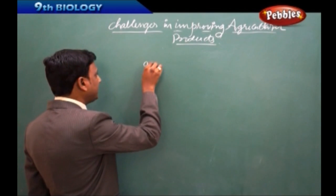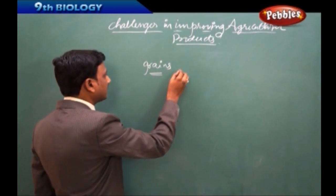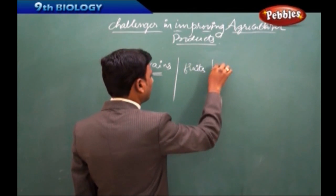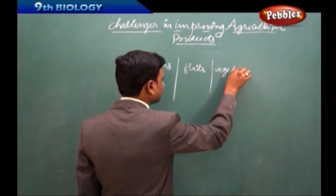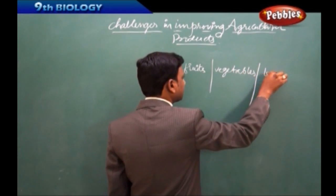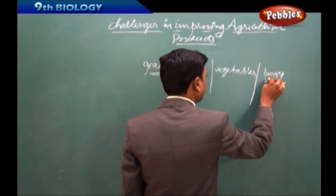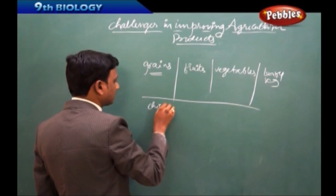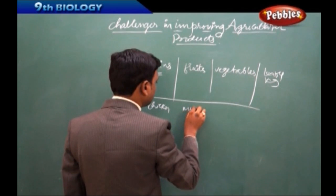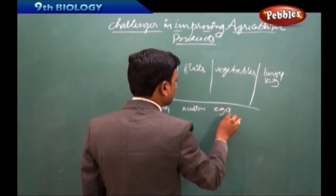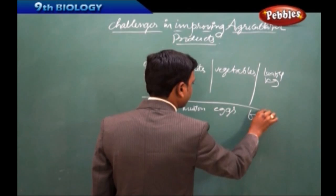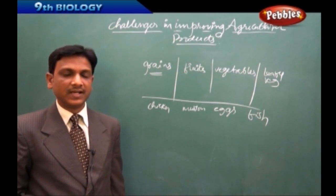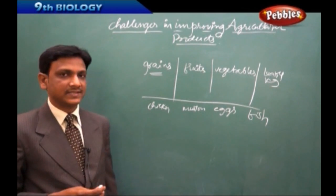All these items — the grains, fruits, vegetables, leafy vegetables, chicken, mutton, eggs, and fish — we call all of these items as agricultural products. As a whole, we call it agricultural product.